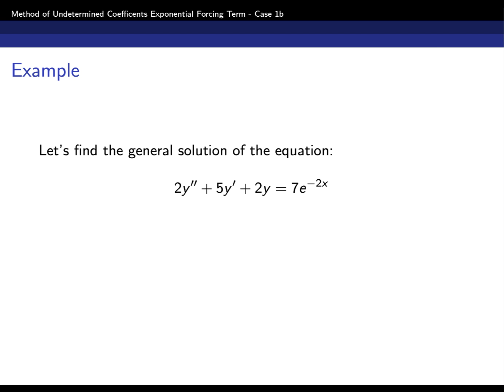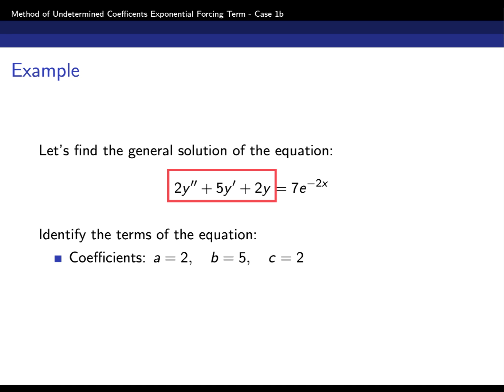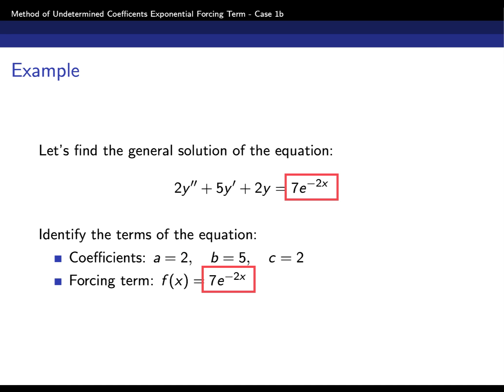Let's do an example. The equation is 2y'' + 5y' + 2y = 7e^(-2x). The first step is to identify the terms. On the left, we have a standard linear second-order differential operator with coefficients a=2, b=5, and c=2. On the right-hand side, we have the forcing term f(x) = 7e^(-2x).